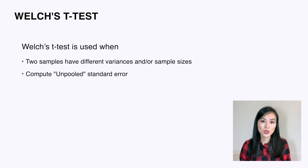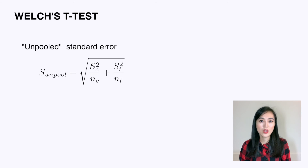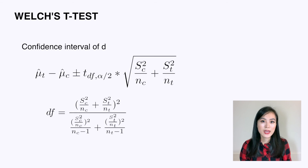We've just covered using the t-test to compare two samples with similar variances and sample sizes. Now let's look at how to deal with the case where two samples have very different variances or sample sizes. Welch's t-test is used for this scenario — it is an adaptation of Student's t-test specifically for when the two standard deviations are not similar, particularly when one is more than twice the other. In that case, the unpooled standard error is used, calculated with this formula, where s_c and s_t are the sample standard deviations of the control and treatment groups respectively.